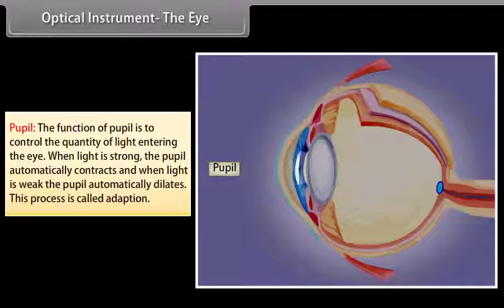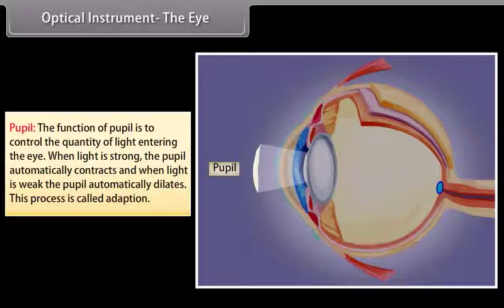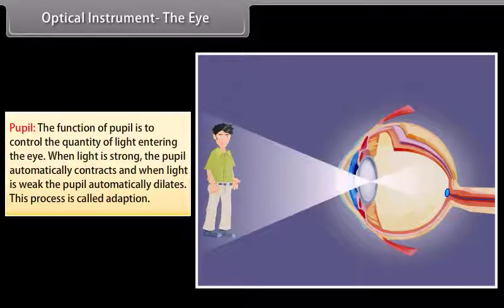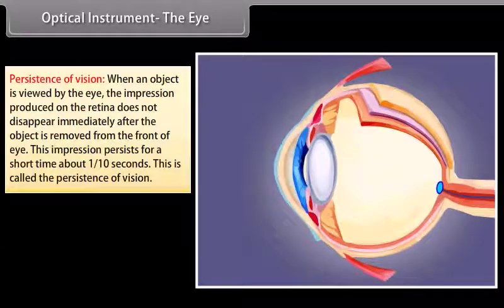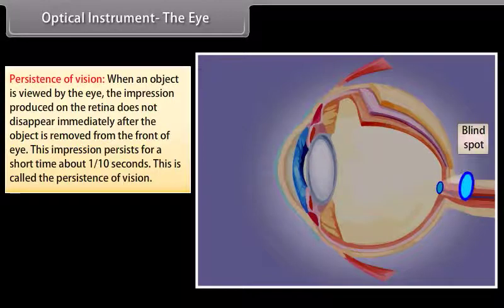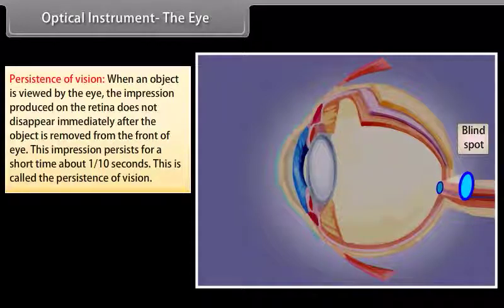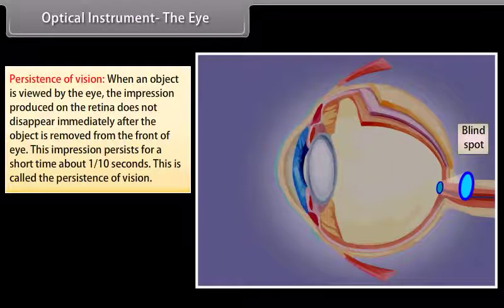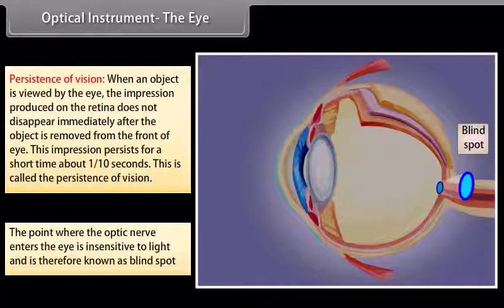The function of the pupil is to control the quantity of light entering the eye. When light is strong, the pupil automatically contracts; when light is weak, it automatically dilates. This process is called adaptation. When an object is viewed by the eye, the impression produced on the retina does not disappear immediately after the object is removed — it persists for about 1/10 of a second. This is called the persistence of vision. The point where the optic nerve enters the eye is insensitive to light and is known as the blind spot.